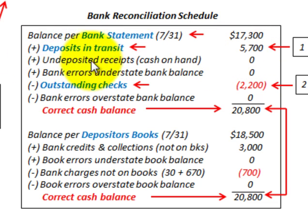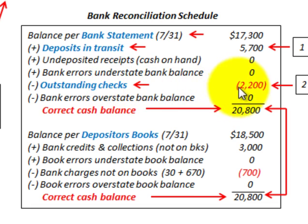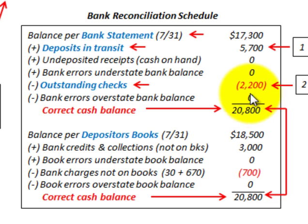You'd also have to add undeposited receipts of cash on hand — we're assigning that a zero amount here. Then you'd have to add back any bank errors that understate the bank balance, again zero. And then you would be subtracting outstanding checks, which we're going to determine to be $2,200. You'd also subtract bank errors that overstate the bank balance, assigned to zero here.